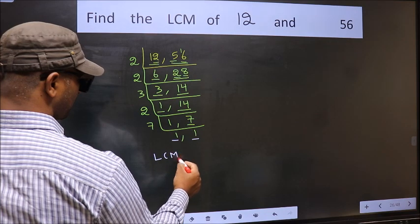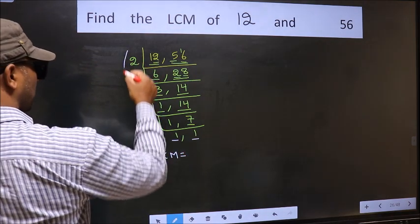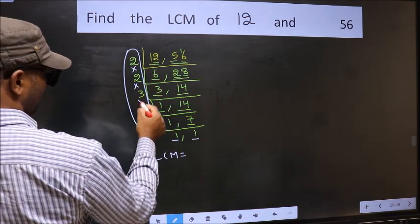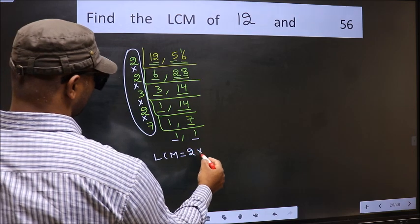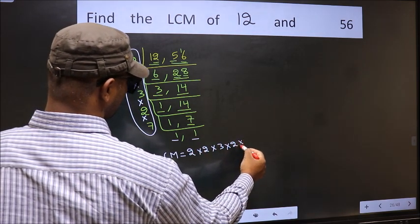So our LCM is, LCM is the product of these numbers, that is 2×2×2×3×2×7.